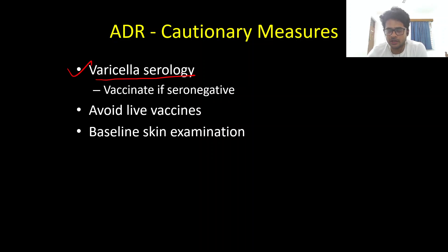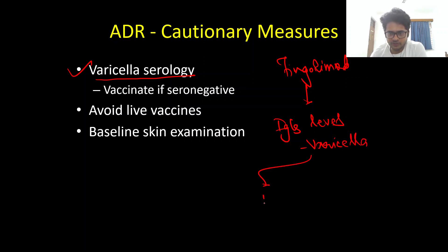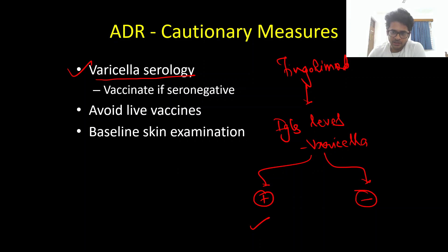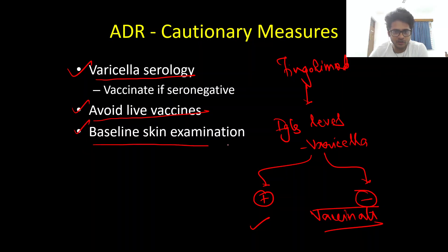Varicella serology is very important before starting Fingolimod, as it can cause disseminated and fatal varicella infections. Check varicella IgG levels — if positive, the patient has sufficient immunity and you can proceed. If IgG levels are negative or low, vaccinate the patient against varicella before starting Fingolimod. Do not vaccinate and start the drug immediately, since the chickenpox vaccine is a live vaccine and live vaccines must be avoided while on Fingolimod. A baseline skin examination is also required given the small risk of basal cell carcinomas and melanoma in the long run.